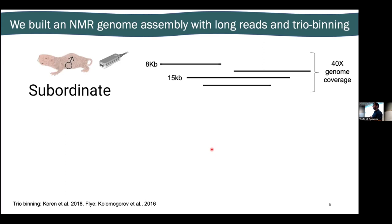What we ended up doing was building a genome assembly based on long reads rather than short reads. At the time, we used Oxford Nanopore R9.4 technology. Each one of these individual reads is not extremely highly accurate at a base pair level, but they're long enough to span common repeats found in the genome like LINE elements.